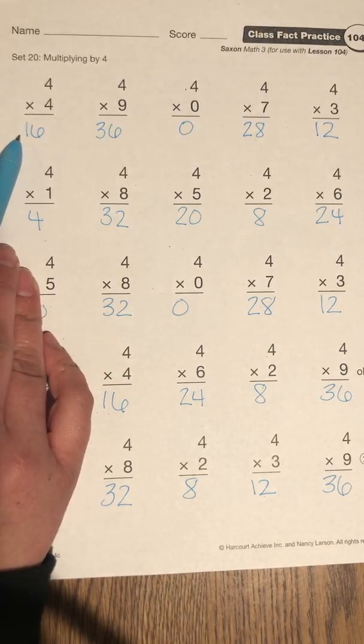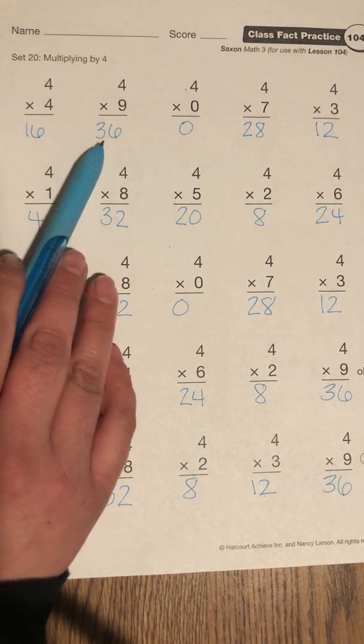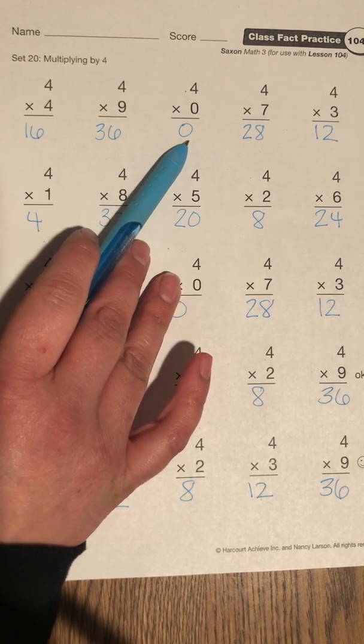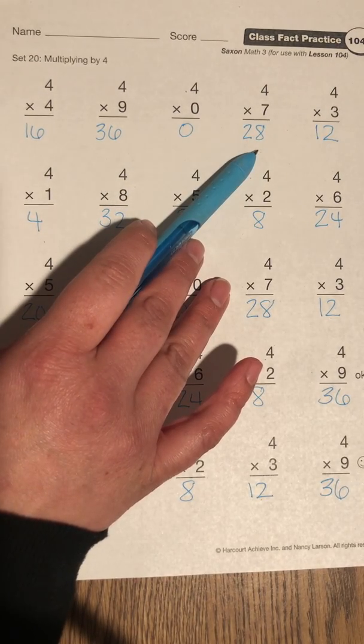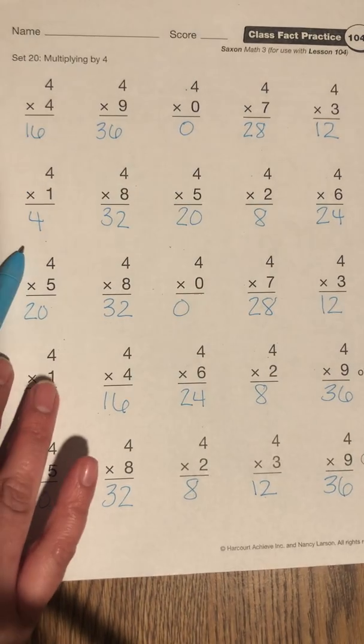4 times 4 is 16. That's also a square number. Think about our square numbers. 4 times 9 is 36. 4 times 0 is 0. 4 times 7 is 28. 4 times 3 is 12. Next row.